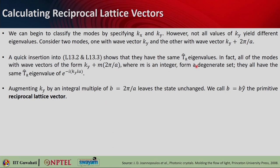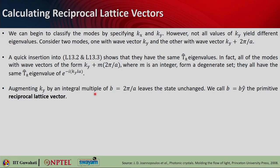Augmenting k_y by an integral multiple of b — where b = 2π/a — leaves the state unchanged. So you can call b = b·ŷ the primitive reciprocal lattice vector. The real lattice is in position space and the reciprocal lattice is in momentum space. Adding integral multiples of the reciprocal lattice vector gives the same state, which is what defines the reciprocal lattice vector.